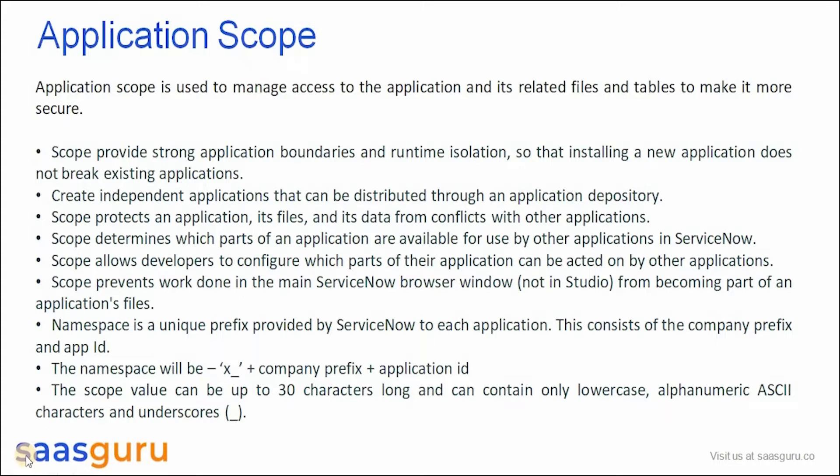Application Scope also determines which parts of an application are available to other applications. For example, if there is an application for meeting rooms and we want to make that module or some other feature available to other applications, we can define those using the Application Scope. This feature also allows developers to configure parts of applications which can be acted upon by other applications.